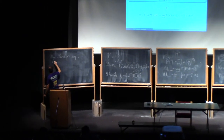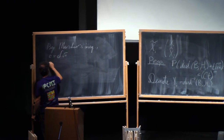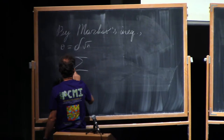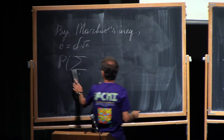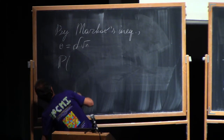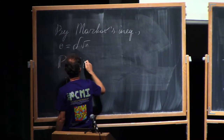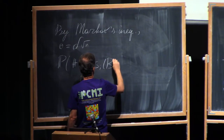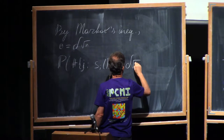If we take theta to be delta times the square root of n, then the probability that the cardinality of the set of j such that s_j(B) is less than or equal to delta times square root of n...